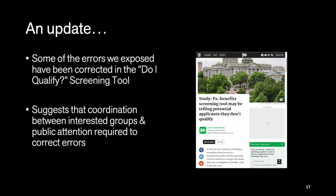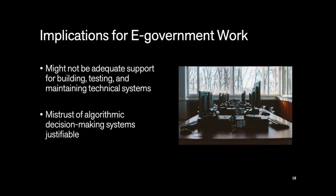A nice update: some of the errors we exposed have been corrected in the Do I Qualify screening tool. The update swiftly followed media coverage of our study, suggesting that coordination with other interested groups and public attention might be required to correct errors. Some implications for the e-government context are that there might not be adequate support for building, testing, and maintaining technical systems, especially when working with a constrained agency budget.